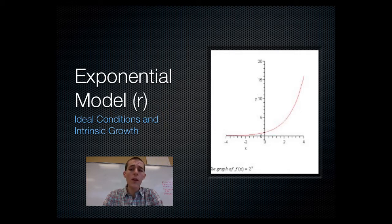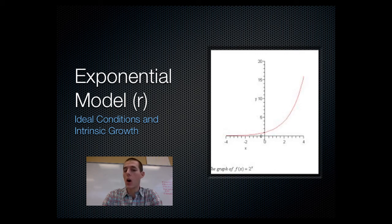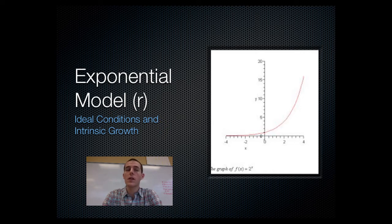The first model you need to be aware of is the exponential model. It is known as the R model because it's based on how quickly an organism can reproduce. That rate at which an organism can naturally reproduce is known as R, or the intrinsic growth rate.